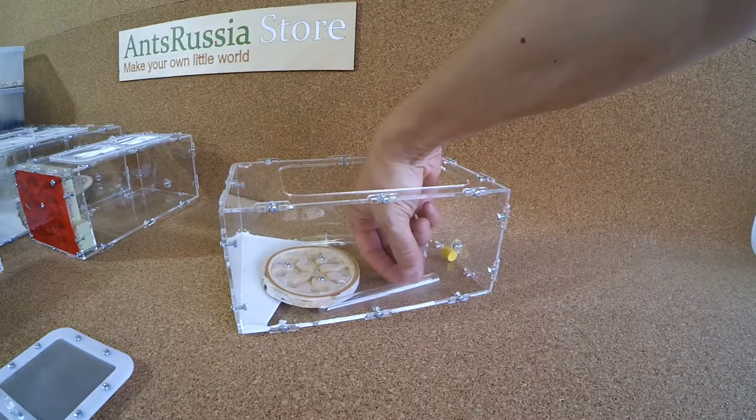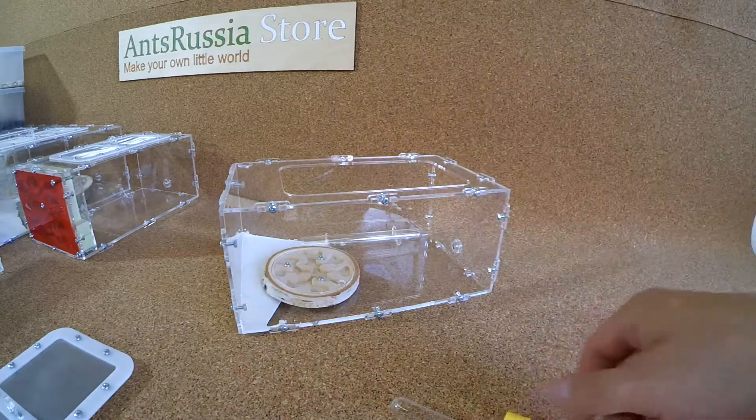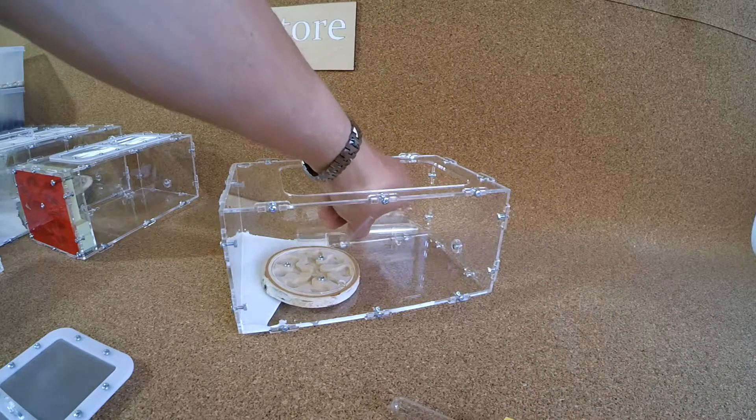There are two test tubes in the formicarium set. First one is for autonomic humidifier and the second one is to be a drinking bowl.